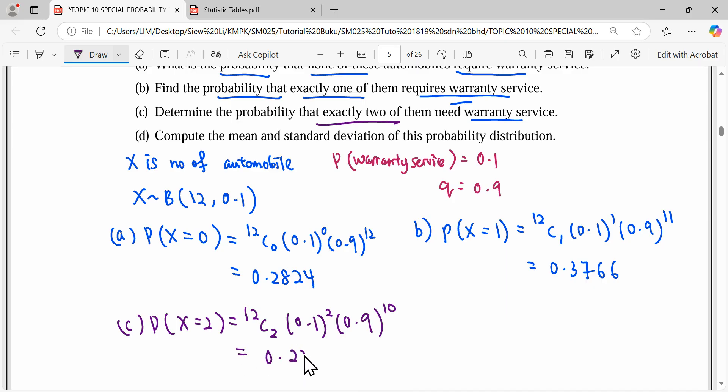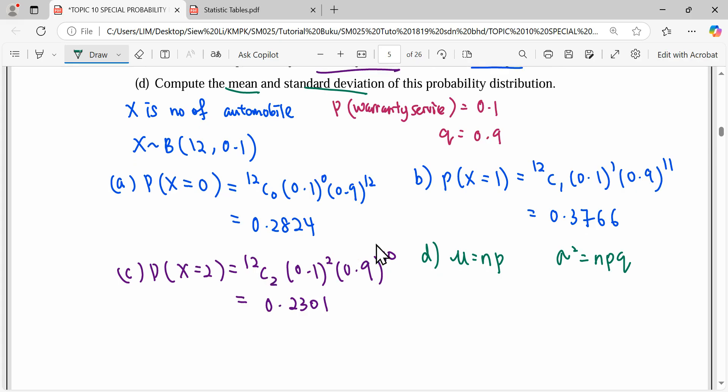And lastly, question D asks us to compute the mean and standard deviation. So mean in binomial is given by the formula np. Standard deviation we can get from variance, so variance is npq. So we take our n times our p.